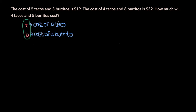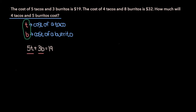Once we determine T and B — the cost of a taco and a burrito — we'll be able to find how much 4 tacos and 5 burritos cost. We're told the cost of 5 tacos and 3 burritos is $19, which translates to 5T plus 3B equals 19. Similarly, the cost of 4 tacos and 8 burritos is $32, giving us 4T plus 8B equals 32.